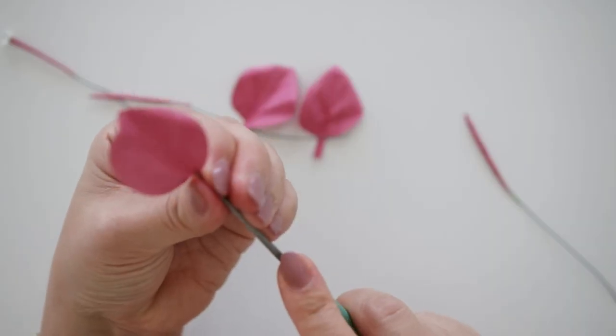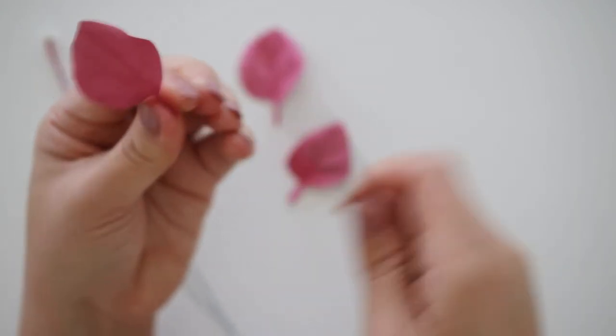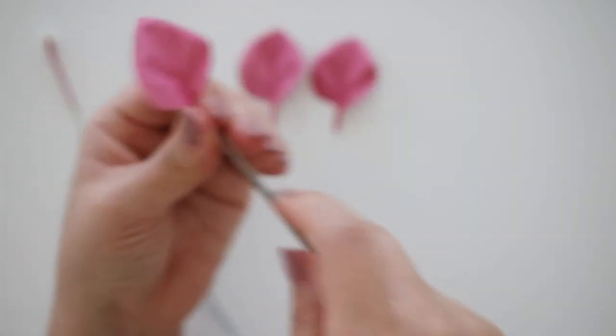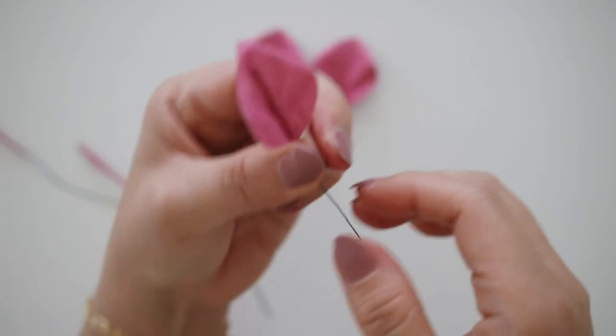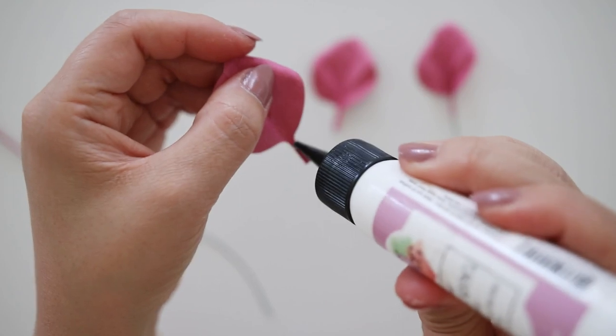Then curl the side top edges and do this to all three petals. Next, I curl the stem end of the petal so my center wire could fit right on top. Add white glue on the stems and add the wire to the three petals with the three center wires. It doesn't matter which order.